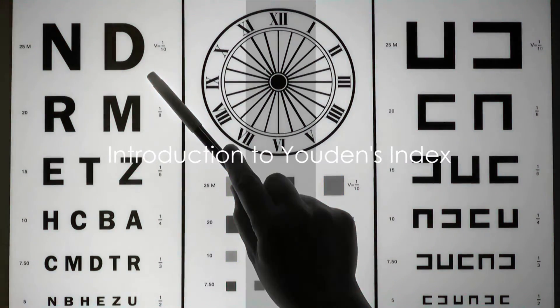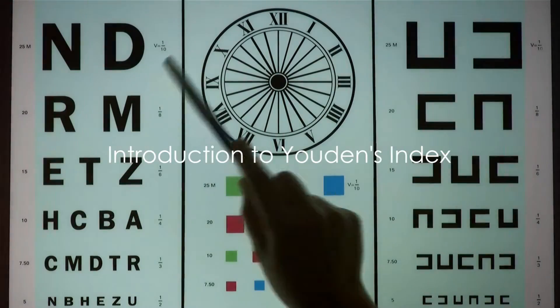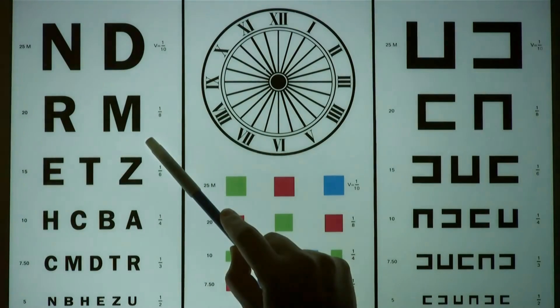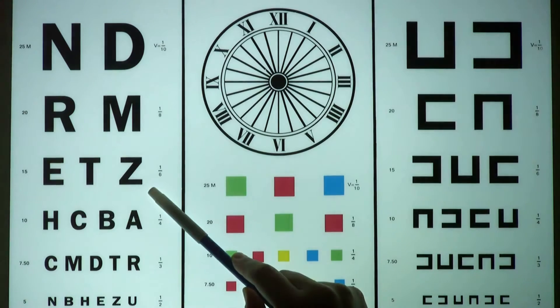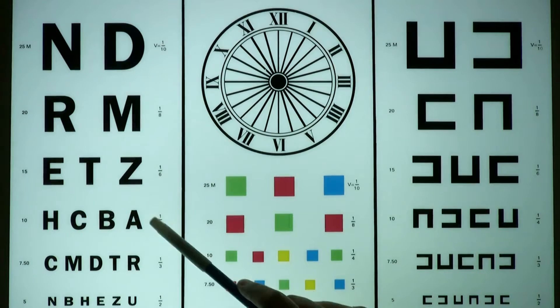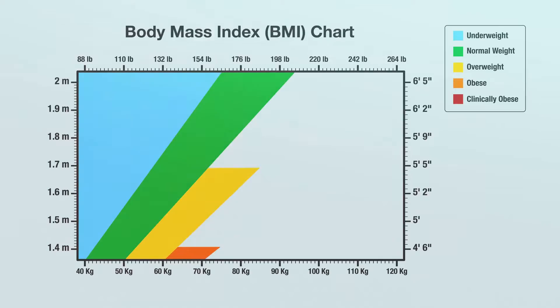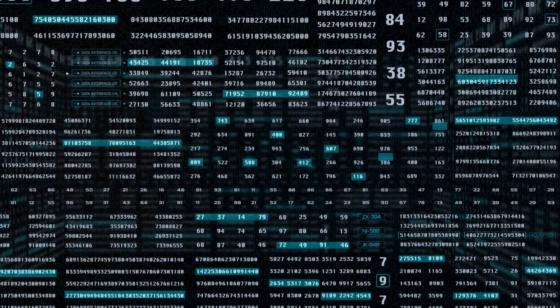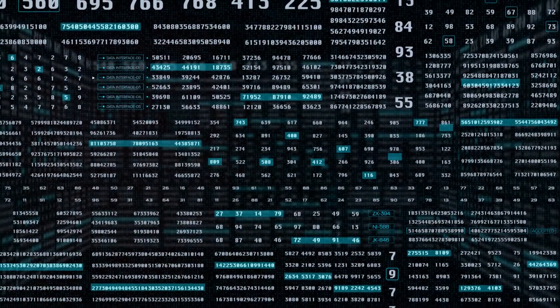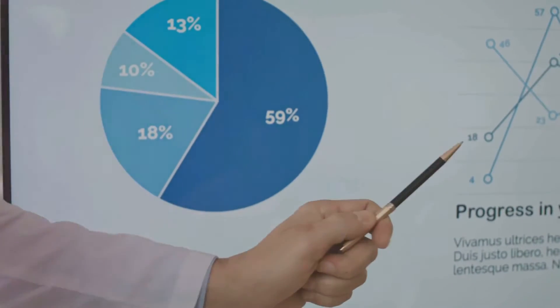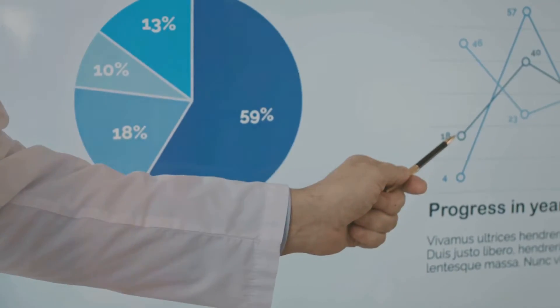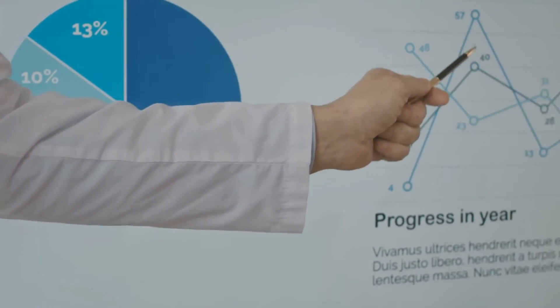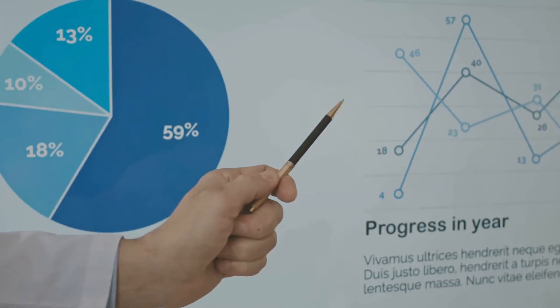Ever wondered about the perfect way to measure the performance of a diagnostic test? A method that considers both sensitivity and specificity? Enter Youden's Index, a comprehensive and robust measure that fills this need. In the realm of statistics, Youden's Index, also known as Youden's J-statistic, is a single statistic that captures the performance of a diagnostic test.